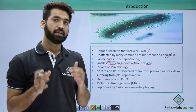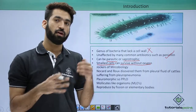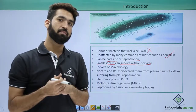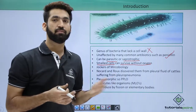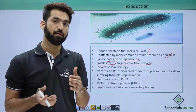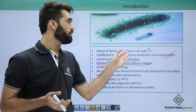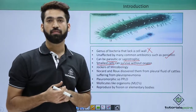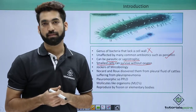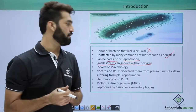Viruses are also smaller than Mycoplasma, but viruses are acellular. So if someone asks what is the smallest cell, your answer should be Mycoplasma — specifically Mycoplasma gallisepticum, which is the smallest cell present on earth.